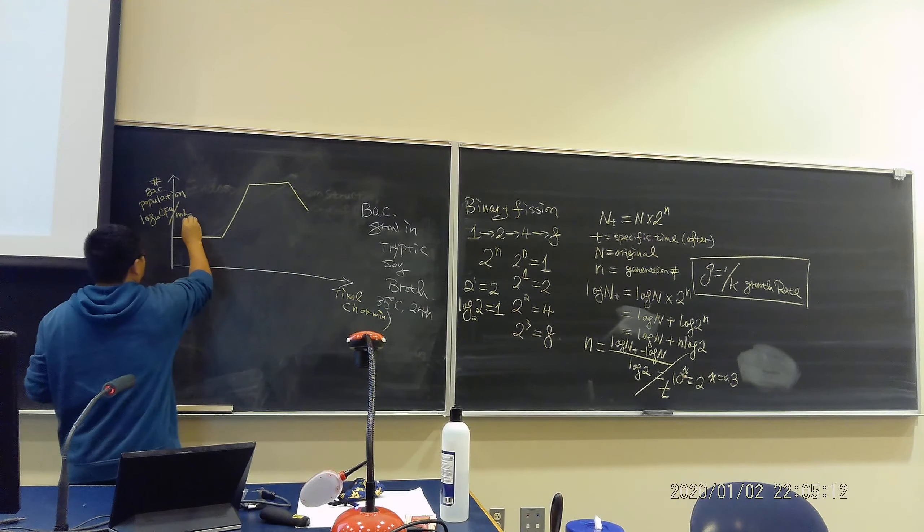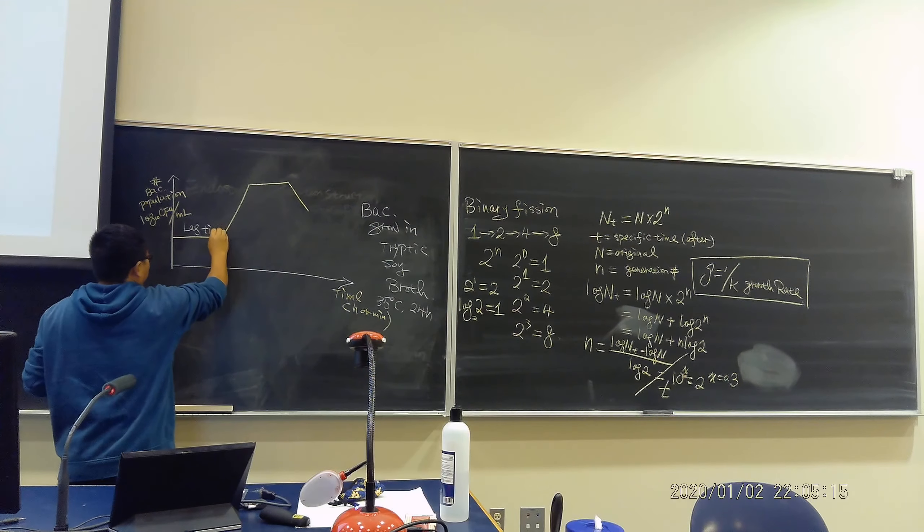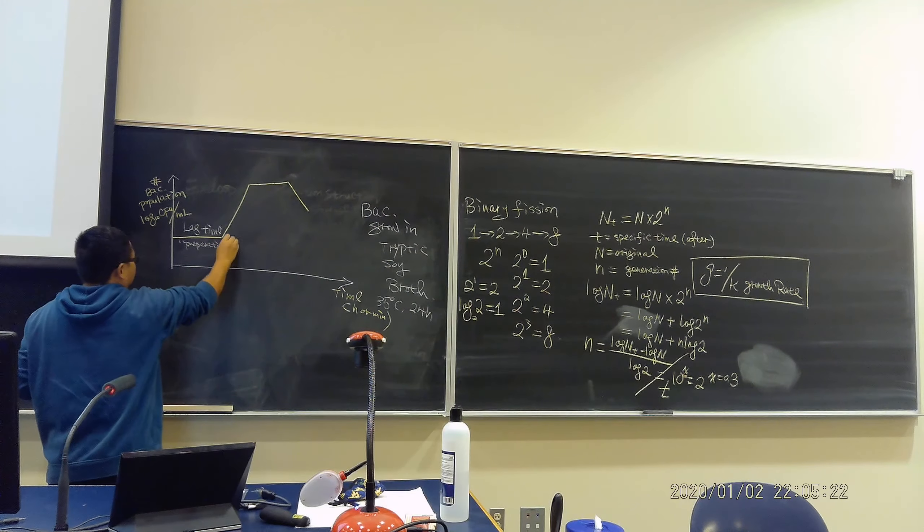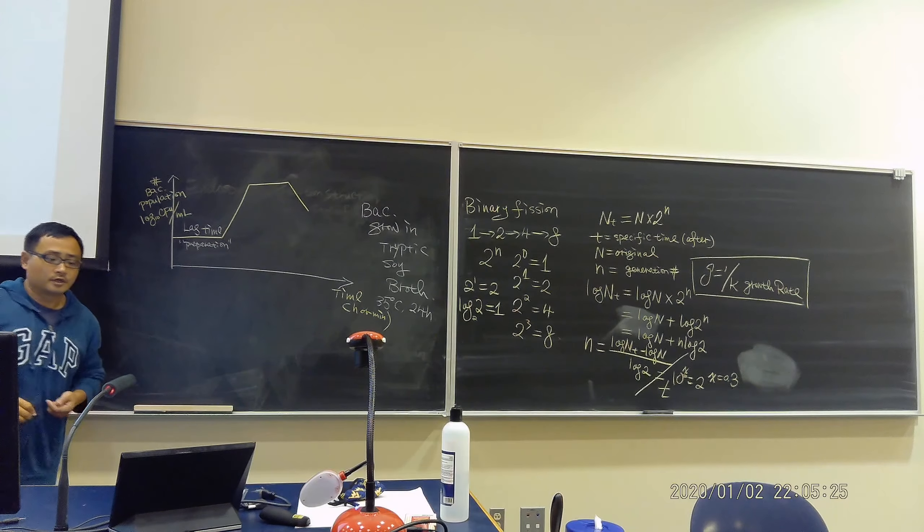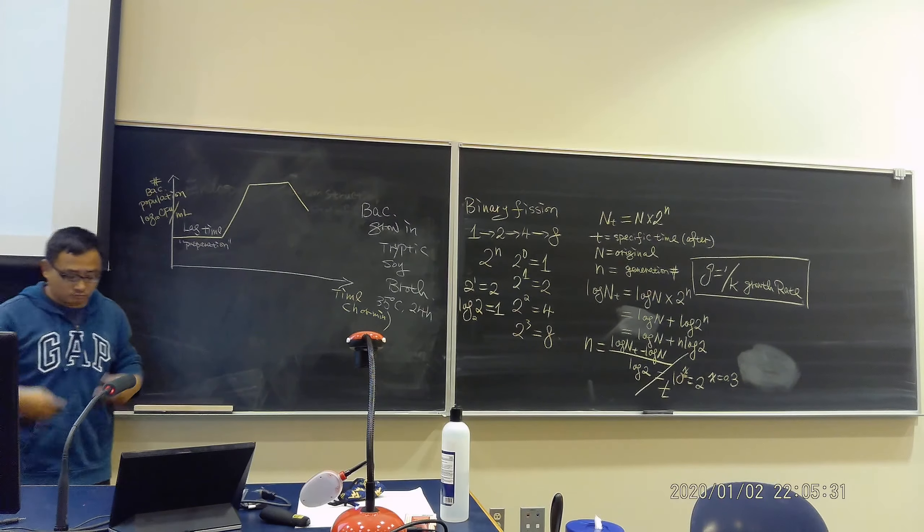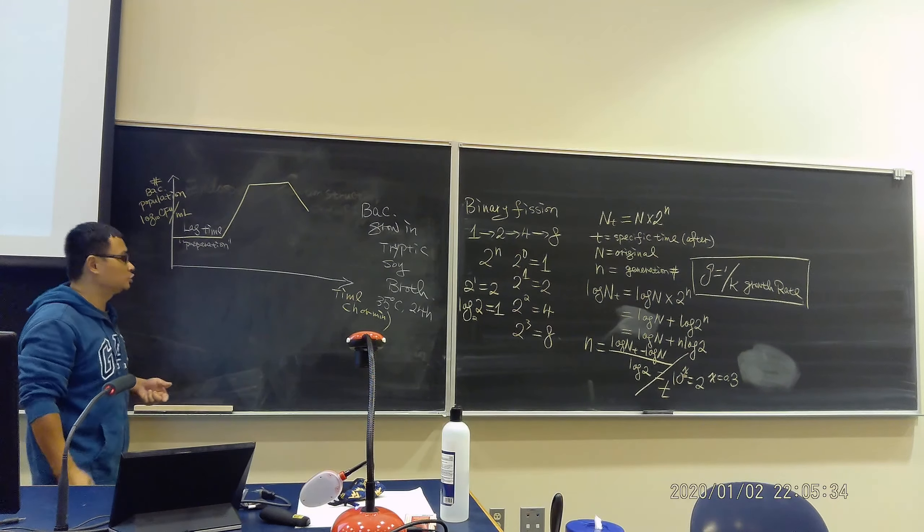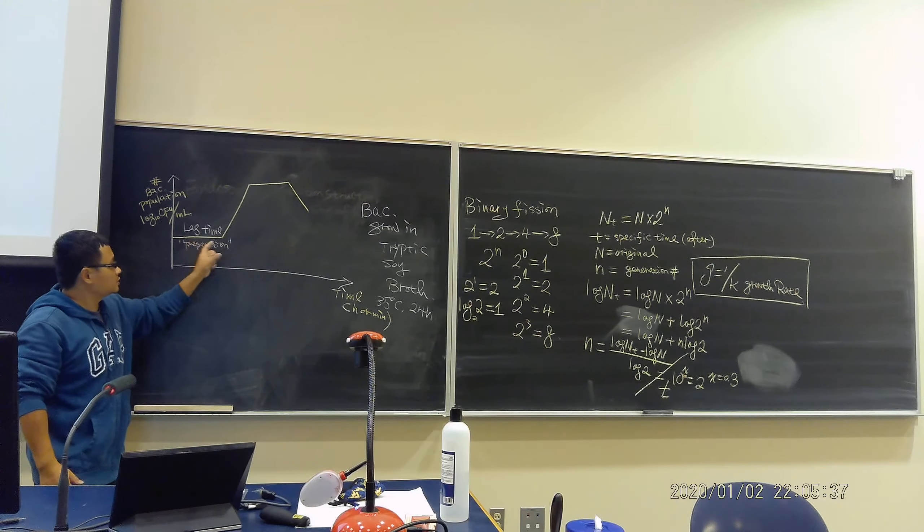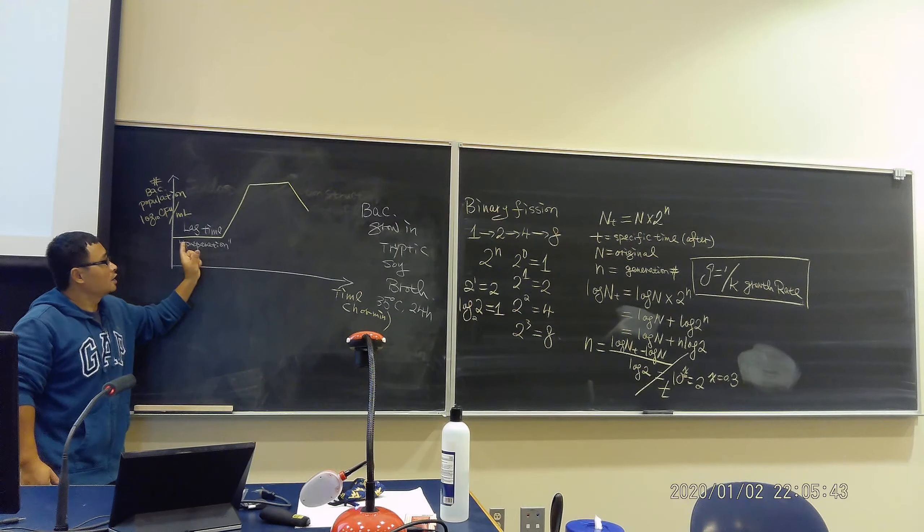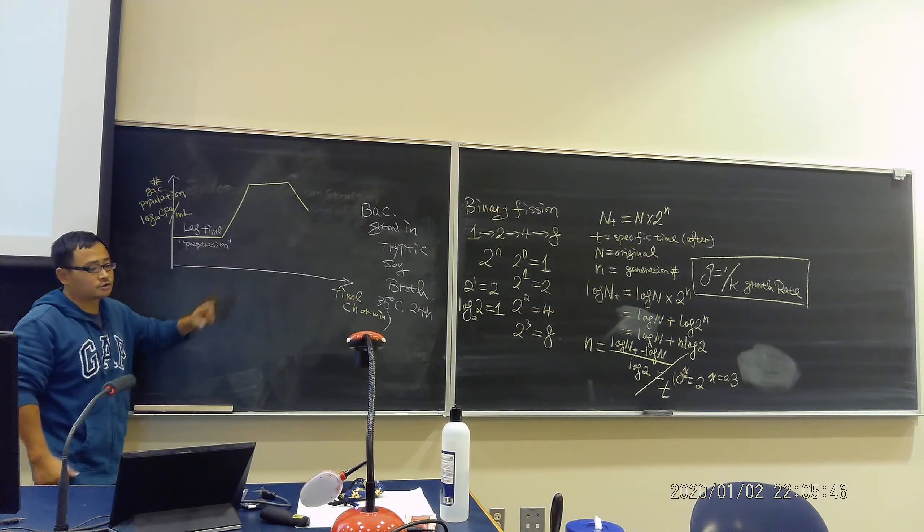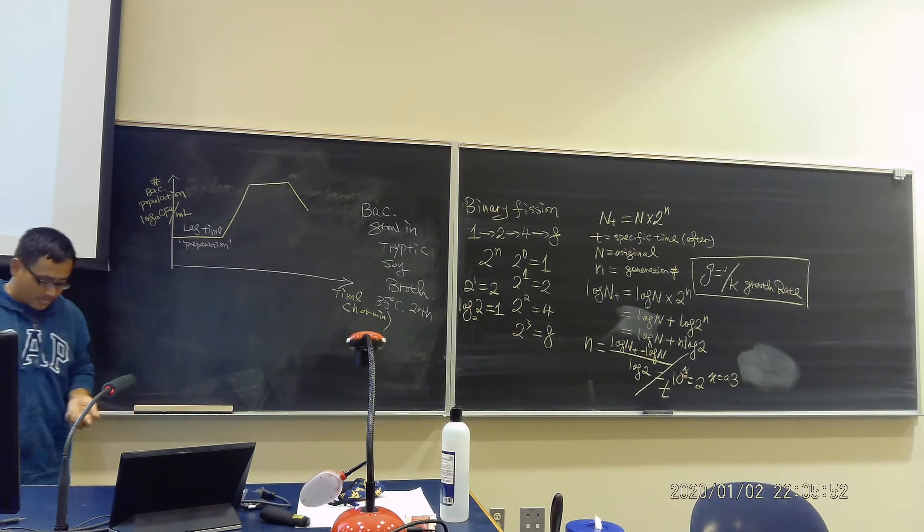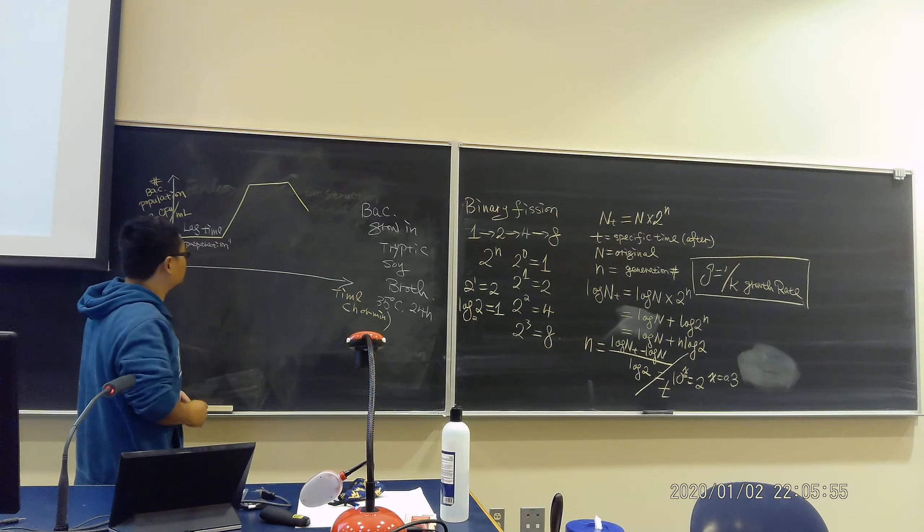This is a standard growth curve. At the beginning we call it lag time. I will say this is a preparation, which means bacteria in the new environment, their DNA, RNA, their cell needs to be settled down, needs to acclimate to the new environment, need to get the nutrition, absorb the nutrition. So this time period is going to be longer sometimes, sometimes short, but they do have a time period which is no growth, settle, but does not mean the bacteria not exist. It's just no growth.